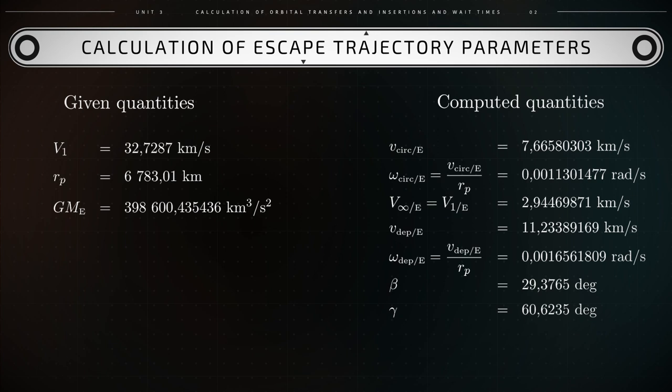With this v_dep_e speed, the spacecraft will leave Earth's orbit. It will exit its sphere of influence and undertake its journey to Mars. We will now compute the journey of our spacecraft to the edge of Earth's sphere of influence, or SOI in short.